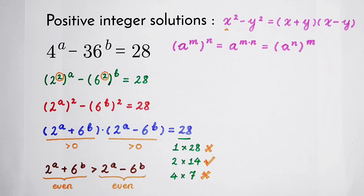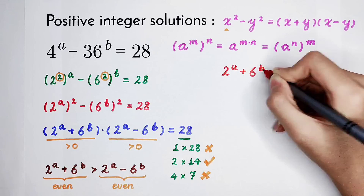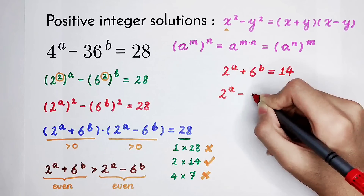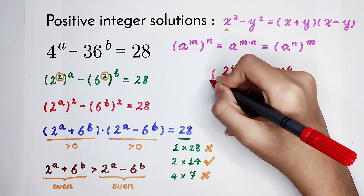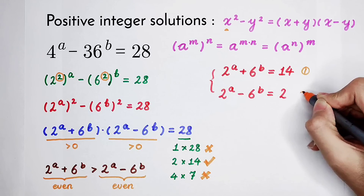The only valid factorization is 2 times 14. Since the sum is always greater than the difference, 2 to the power of a plus 6 to the power of b equals 14, and 2 to the power of a minus 6 to the power of b equals 2. We now solve this system of equations.